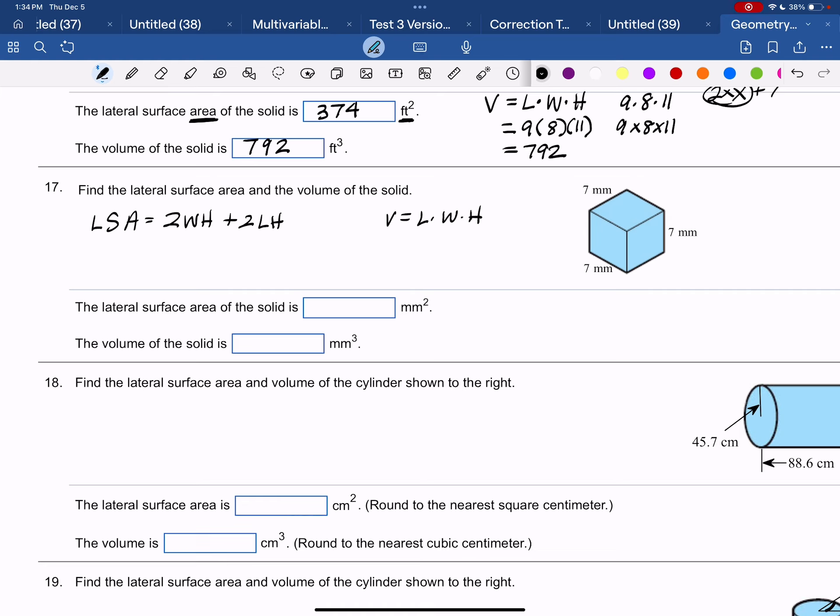And this time, all the measurements are the same. So 2 times 7 times 7 plus 2 times 7 times 7 is going to be 98 plus 98,